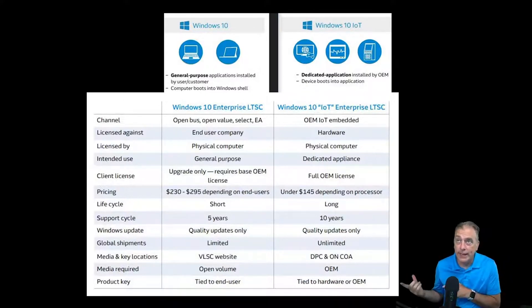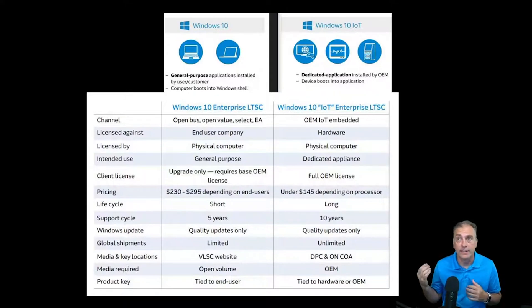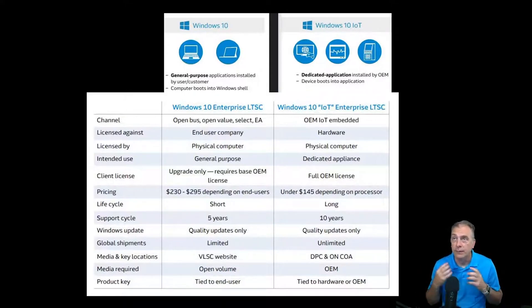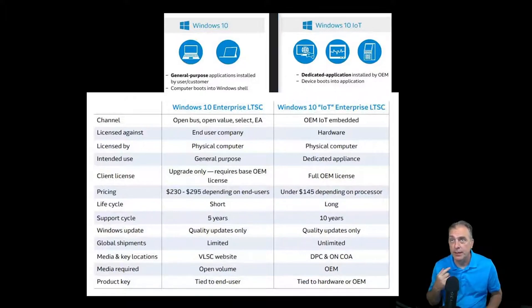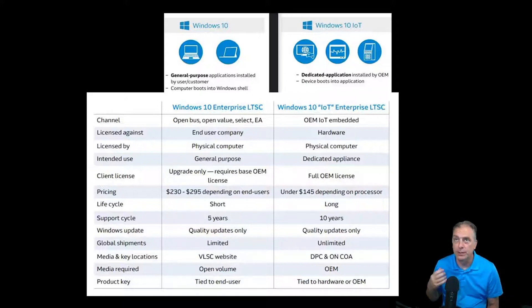Compared to the right, the IoT license is based on the processor of your device with three price points, and the highest one is still under $145. If you want to know your exact pricing, get with us here at Arrow — I'll have the email address in the link below as well as at the end of the video. Reach out to us and we'll get you the exact price so you can see how much money you can save when you're building appliances.